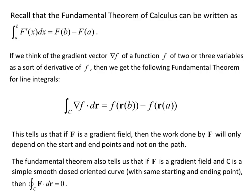So in other words, if you have a closed loop with the same starting and ending point, then from the fundamental theorem you're going to get the same value subtracted from itself when you apply your fundamental theorem, which will give you zero.